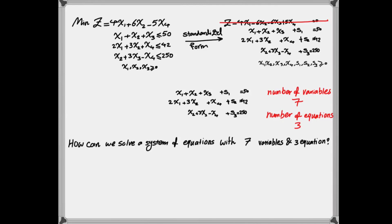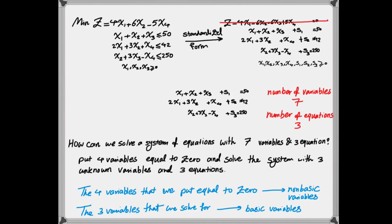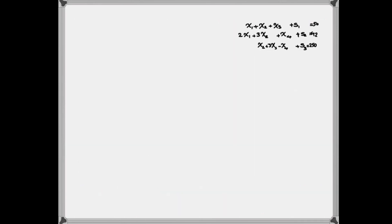The question is how can we solve a system of equations with seven variables and three equations? Typically, the way we deal with that is we put four variables equal to zero — as many variables as we don't have equations for. So we put four variables equal to zero and solve the system for the three remaining unknown variables. The four variables we put equal to zero are called non-basic variables, and the three variables we choose to solve the system for are called basic variables.